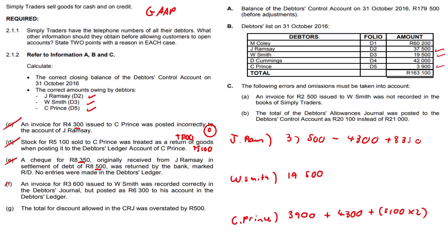An invoice for 3,600 issued to W Smith was recorded correctly in the debtors journal but posted as 6,300 to his account in the debtors ledger. The difference between 3,600 and 6,300 — it was overstated, too much — so we need to subtract the 2,700 amount. The 2,500 invoice we've already dealt with in the debtors control account needs to be added back to W Smith's account because it wasn't recorded. The total of the DAJ was posted to the debtors control account, so that doesn't affect our debtors list at all.